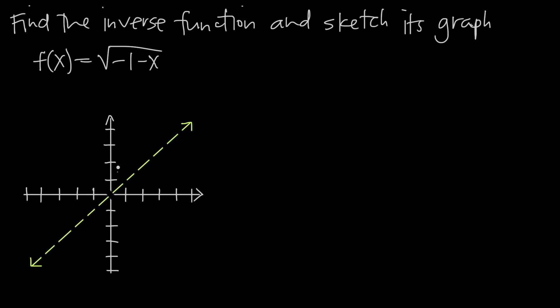What if we take x equal to positive 1? We'd get negative 1 minus 1, which is negative 2, and we'd end up with the square root of negative 2. We can't take the square root of a negative number, so that's also not in the domain of the function.